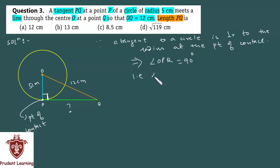Now, if this is a right-angled triangle, you can apply Pythagoras theorem, in which OP is your perpendicular, PQ is your base, and OQ is your hypotenuse. So therefore...